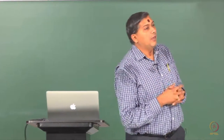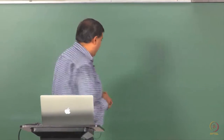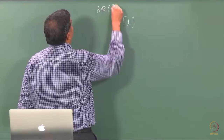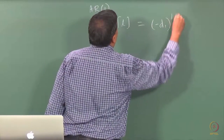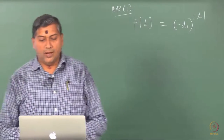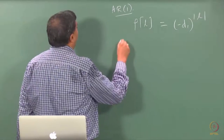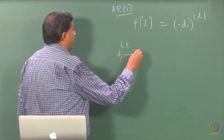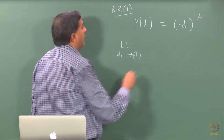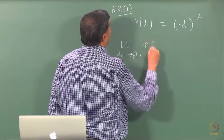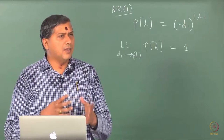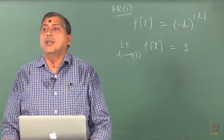We have discussed earlier that the ACF of an integrating process has a slow decay. When you take an AR1 process, we know that the ACF is theoretically (-d1) raised to mod L. We can evaluate this ACF in the limiting case as d1 goes to -1, in our case because of the sign convention taken.